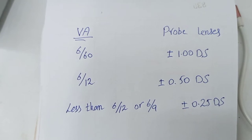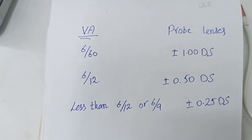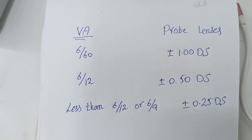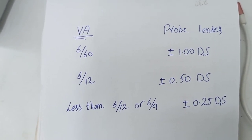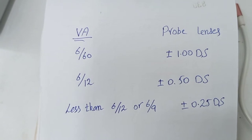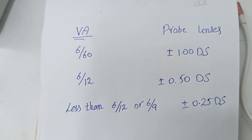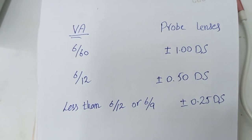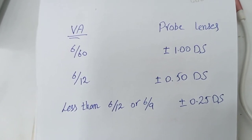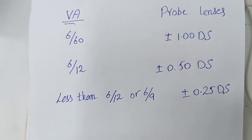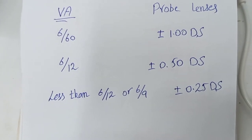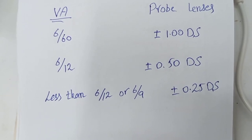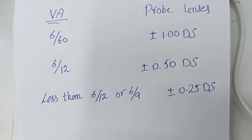We select probe lenses according to the patient's visual acuity. If the visual acuity is 6/60, we use ±1.00 DS. If it is 6/12, we use ±0.50 DS. If the visual acuity is better than 6/12 — such as 6/9 — we use ±0.25 DS.